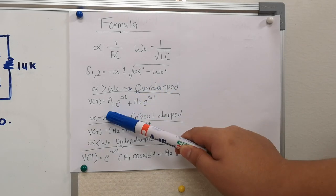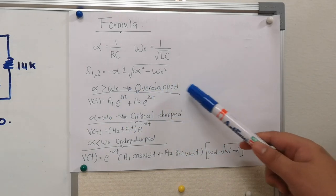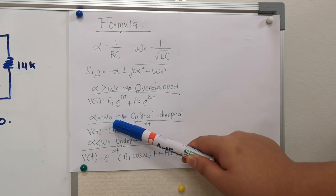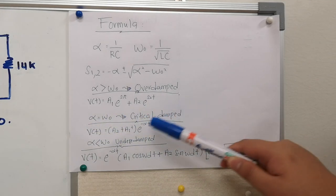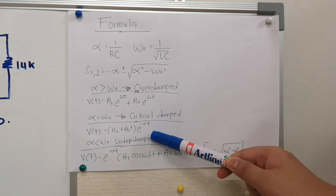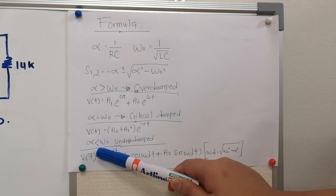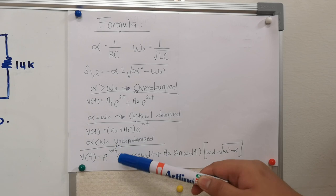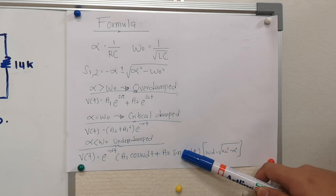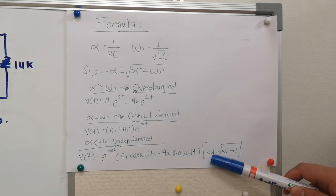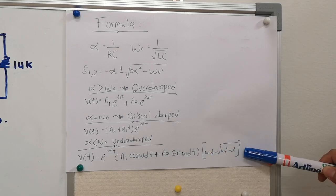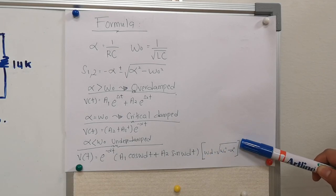The overdamped formula is shown here. The second case is when alpha equals omega naught, which is critically damped — this is the formula we use. Last but not least, when alpha is less than omega naught, it is underdamped. This is the formula we use and we have to find omega D first. This is the formula for omega D.